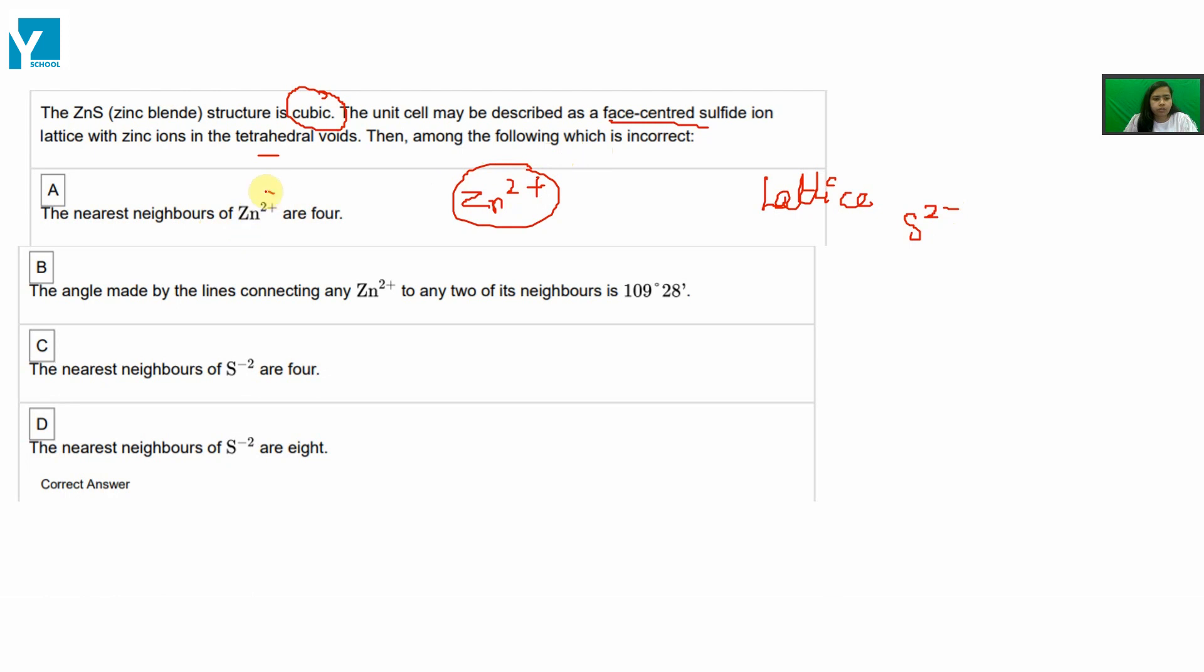Nearest neighbors of Zn²⁺ are four. Because Zn²⁺ is present in tetrahedral voids, this is around four atoms—something like this. Three atoms and one on this void. Zn²⁺ present has the nearest neighbors: one, two, three, four atoms. This statement is correct.